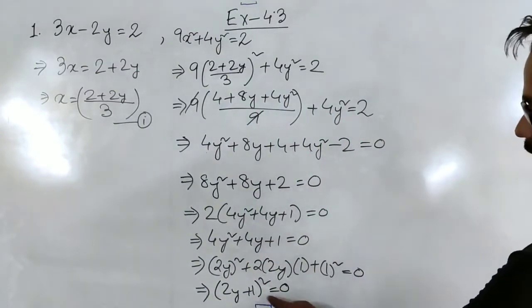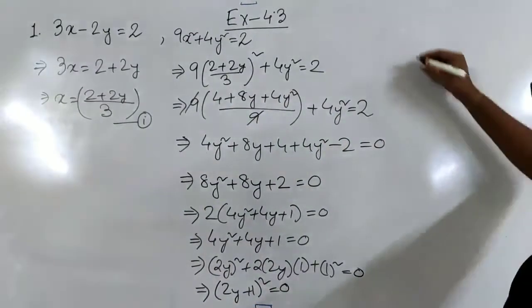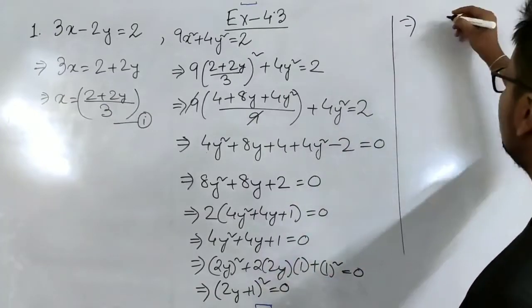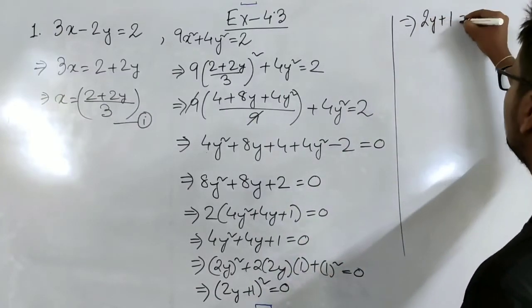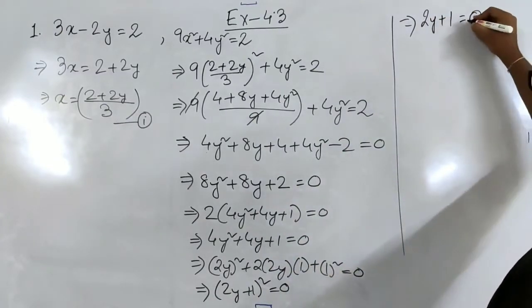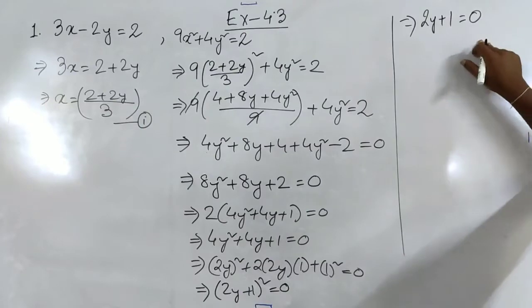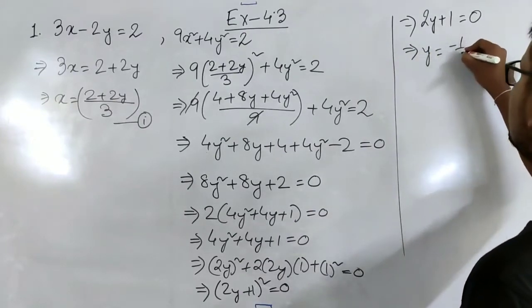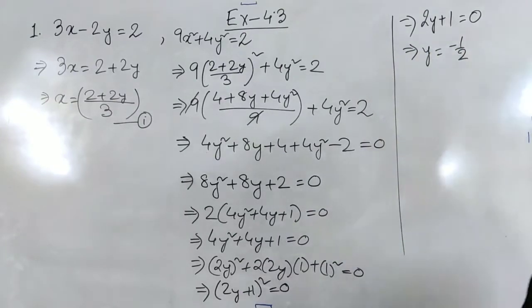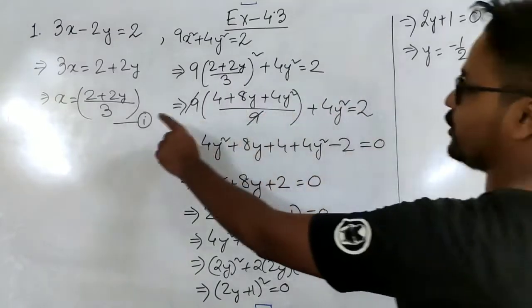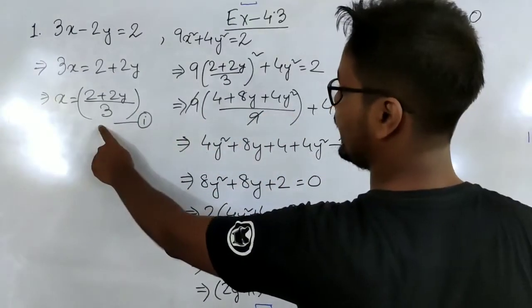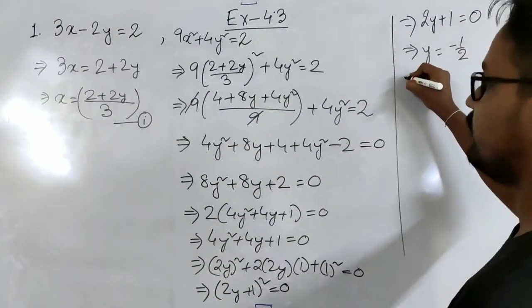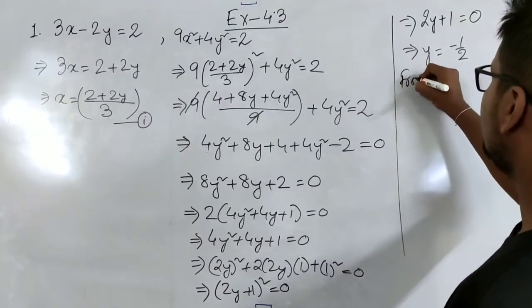Continuing from here, if we simplify, we get (2y plus 1) equal to 0 — or the square root of 0, which is after all going to be 0. From here we can find y equal to minus 1/2. When y equals minus 1/2, we put that value into equation 1.